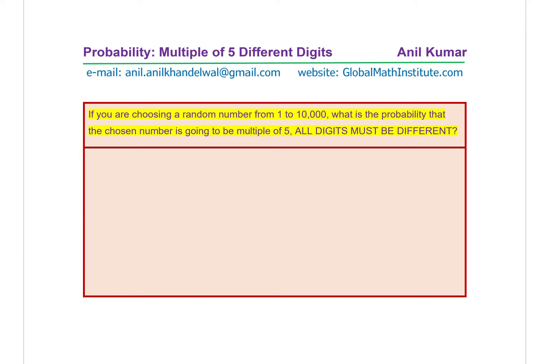Here is a brilliant question from one of our subscribers. The question is: if you are choosing a random number from 1 to 10,000, what is the probability that the chosen number is going to be a multiple of 5? All digits must be different.